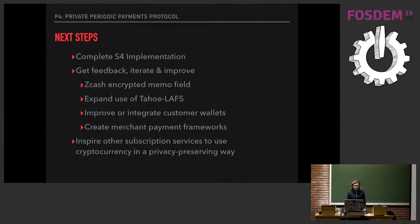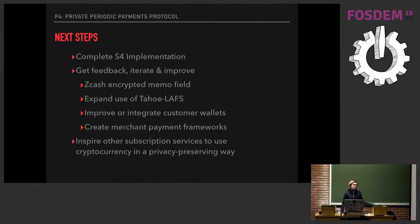For example, there's an encrypted memo field in Zcash transactions — we could use that more heavily for communication, and maybe even put invoice data in it. We could also expand on using Tahoe-LAFS to communicate in a private manner with end users about their subscription status. And it could be cool to work with other wallets to build in subscription management, and to create a merchant payment framework.